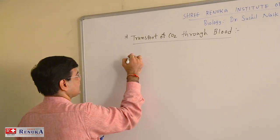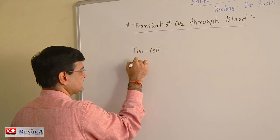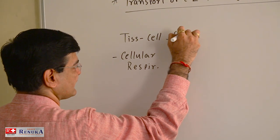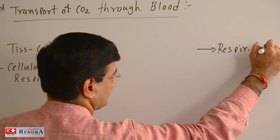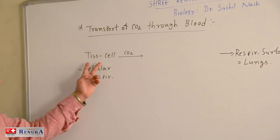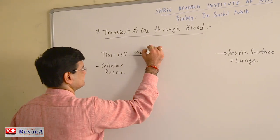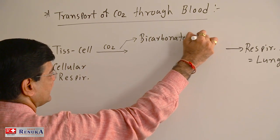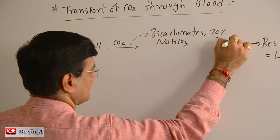Carbon dioxide is formed in the tissue cells — that is, each and every cell of our body — due to cellular respiration. This carbon dioxide is transported towards the respiratory surface, which is the lungs. CO2 from the tissue cell is transported towards the respiratory surface in three different forms, and the first is in the form of bicarbonates. Nearly 70% of carbon dioxide is transported in the form of sodium bicarbonate through blood towards the respiratory surface.